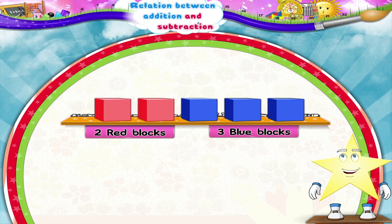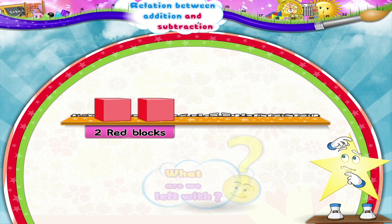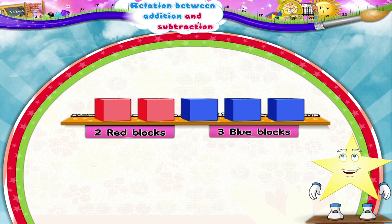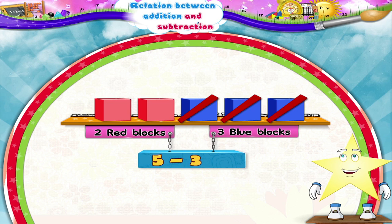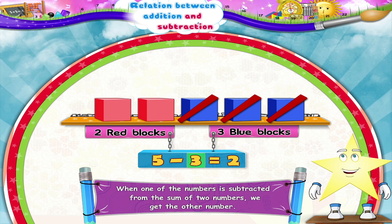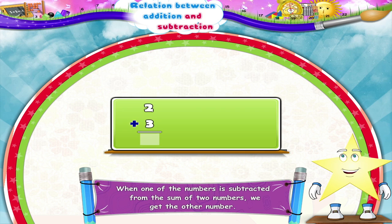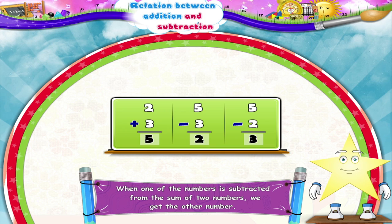And Starry, suppose we take away the three blue blocks from the train. What are we left with? Two red blocks. Subtraction again. So, five minus three is equal to two. Have you noticed, Starry, that when one of the numbers is subtracted from the sum of two numbers, we get the other number? Two plus three is equal to five. Five minus three is equal to two. Five minus two is equal to three. Interesting, isn't it?